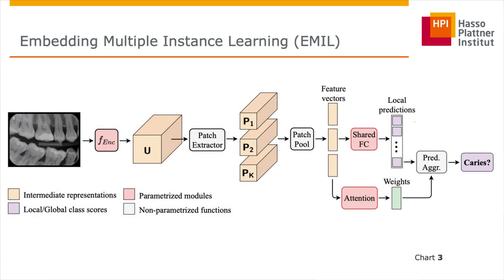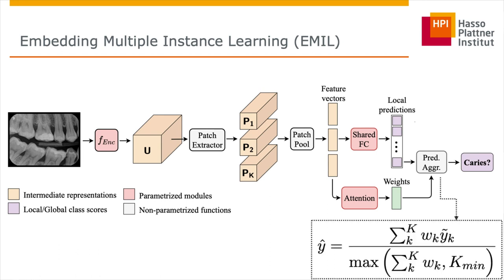In our architecture, which we call EMIR, the input image is first encoded by a convolutional neural network. Patches are subsequently extracted from the feature map using a sliding window. Each patch embedding is pooled, resulting in patch feature vectors. Each of these feature vectors is then both classified and sent to an attention module which computes scores for each patch. Finally, each patch prediction is weighted according to its attention score, resulting in a global image-level classification.